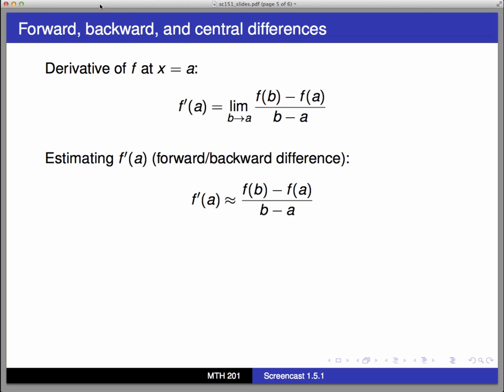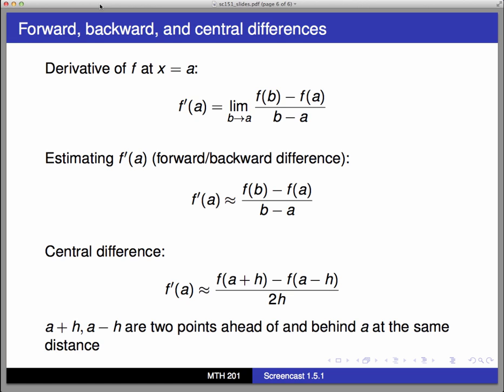If it's possible to look at symmetric data points equally spaced both before and behind a, we can use a central difference. To estimate f'(a) using a central difference, we go to a in the table and find a point ahead of it and another point behind it at the same distance, then calculate this fraction.